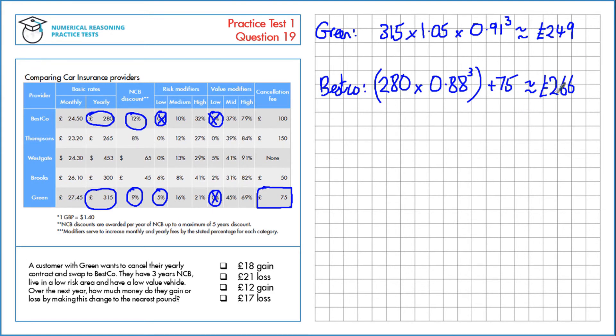So the difference between these two is an increase of £17 total, so that's a £17 loss from swapping to Besco this year.